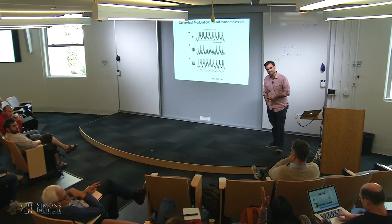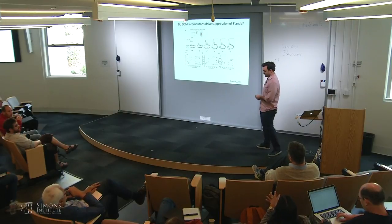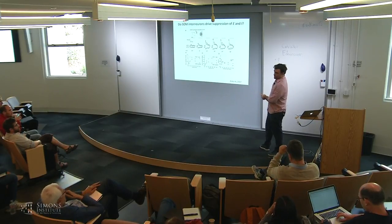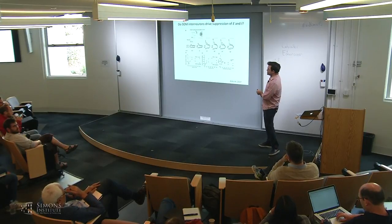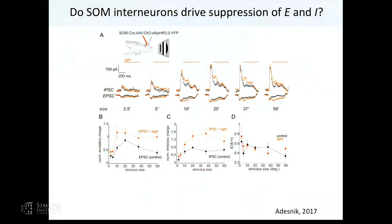Another question: the somatostatin population is a small minority — what is known about the connectivity? There are two reasons why you see more inhibition when you suppress SST cells. One: somatostatin cells indirectly inhibit parvalbumin cells, and much of the inhibition measured is from PV cells near the soma. Two: you relieve surround suppression, pyramidal cells fire more, and then drive PV cells more — the inverse of what surround suppression is doing in the ISN. It's probably a combination of the two.